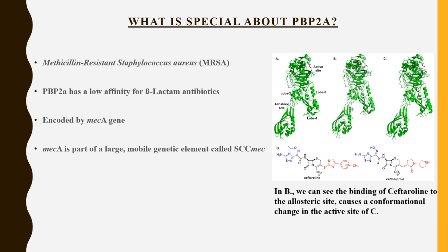PBP2A is encoded by the mecA gene, which is part of a large mobile genetic element called SCC-mec — Staphylococcal Cassette Chromosome mec. The mecA gene is responsible for the expression of PBP2A. To test whether a staph strain is methicillin-resistant, you would look for the presence of the mecA gene. Since mecA is responsible for PBP2A and therefore resistance to beta-lactam antibiotics, we want to know how Staphylococcus obtained this mecA gene in the first place.